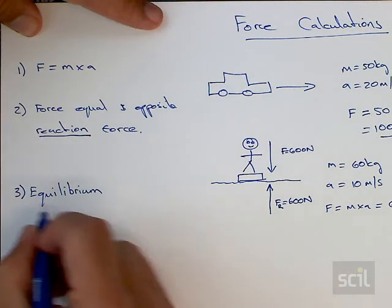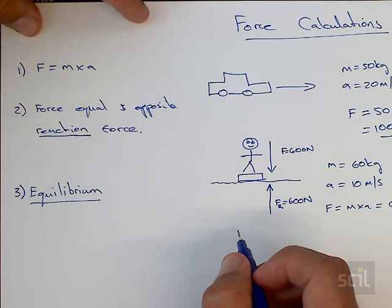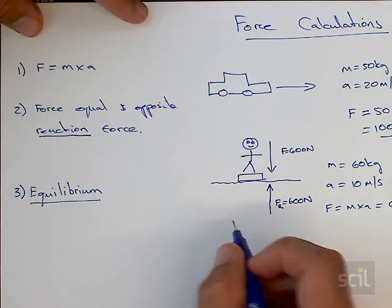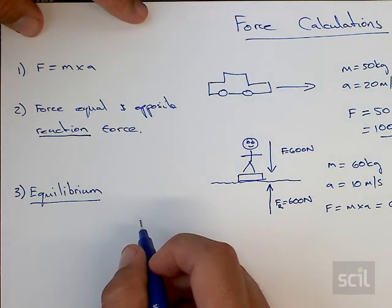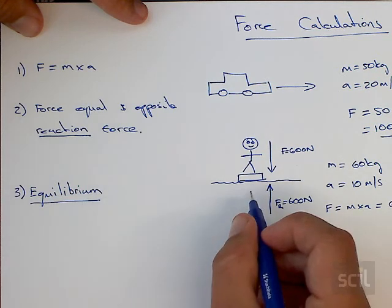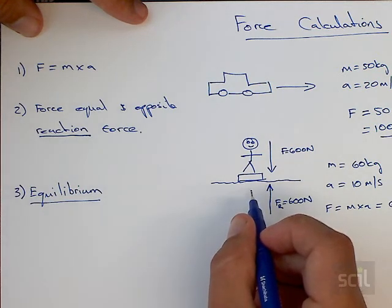When a system is in equilibrium, basically we're saying there is no resultant movement or no resultant action because of that whole system. So in this example, a girl standing on a set of scales, there is no final movement, she's standing dead still, therefore there is no resultant.